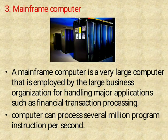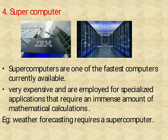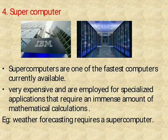Mainframe Computer: the mainframe computer is a very large computer employed by large business organizations for handling financial transaction purposes. The computer can process several billions of program instructions per second. This is the mainframe computer. Fourth, Super Computer — one of the fastest computers currently available, very expensive and employed for specialized applications that require an immense amount of mathematical calculation. For example, weather forecasting requires a super computer.